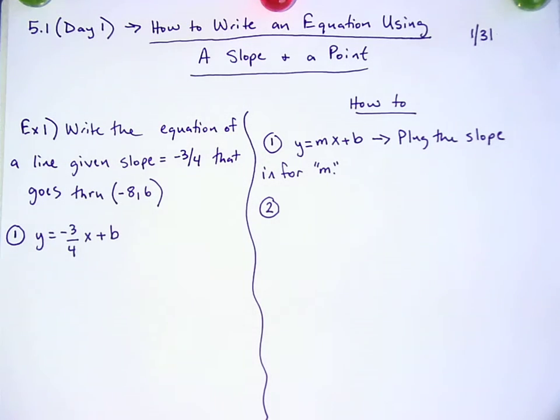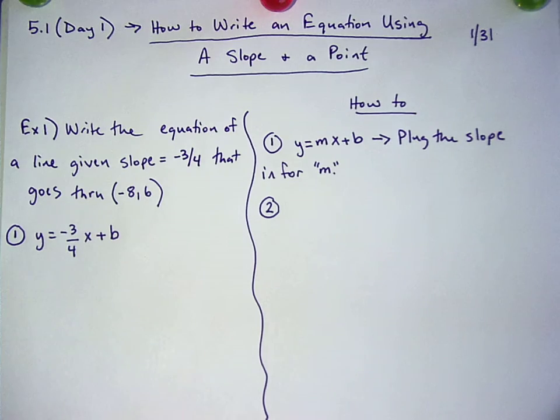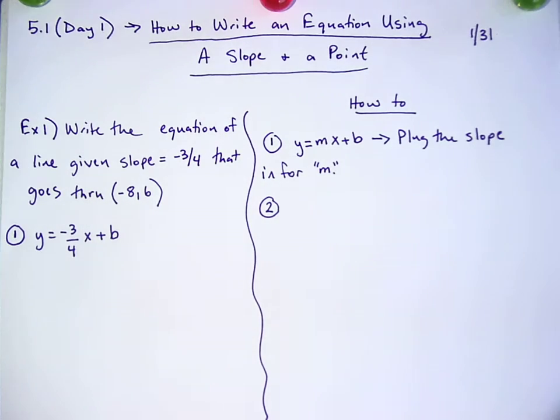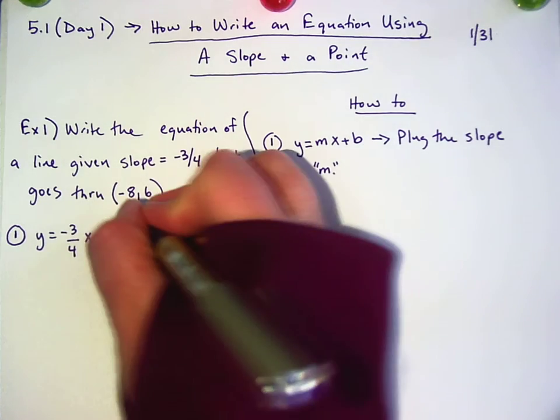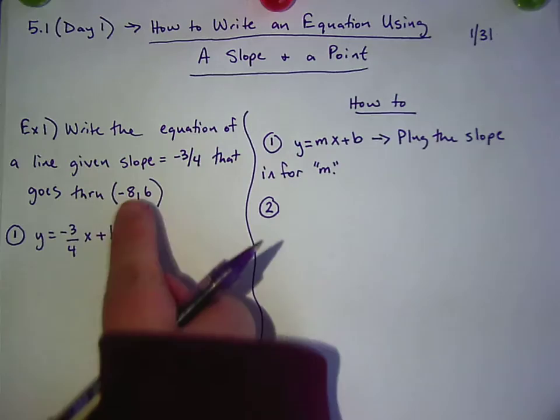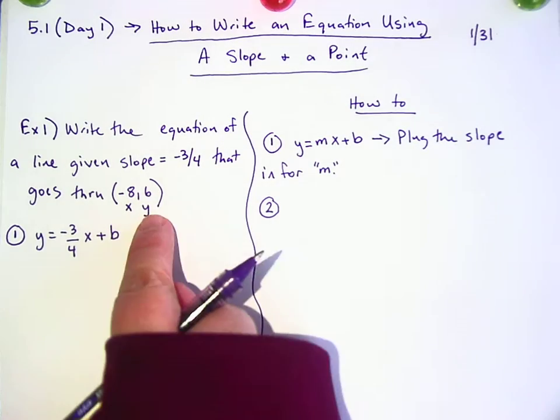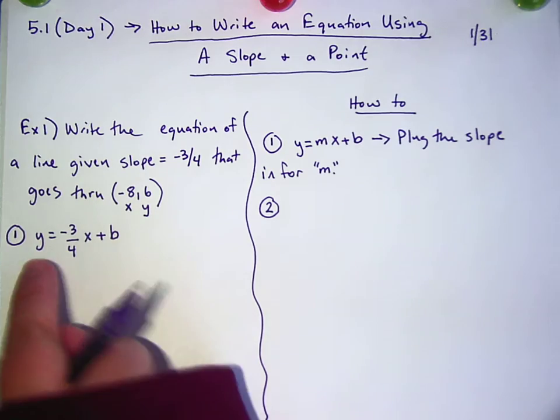Anybody have an idea how we can use the point to find out what the y-intercept would be? Dylan? You'd figure out what y is within the point that is given, and then we can use the y. Well, no. We've got an x and a y, and technically any xy should work in this equation. So if we plug this in for x and this one in for y, do you see how we'll only have b left?